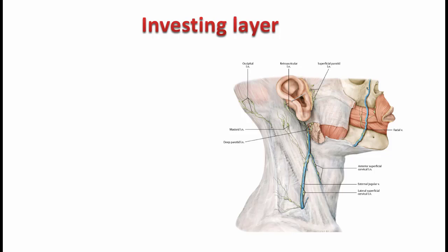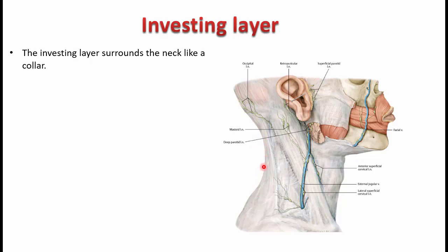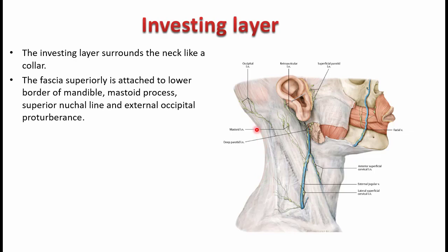First, let us trace the investing layer of deep cervical fascia. It completely surrounds the neck like a collar. It is attached posteriorly to the ligamentum nuchae, and superiorly it is attached to the lower border of the mandible, then continues to the mastoid process, external occipital protuberance, and the superior nuchal line. In the posterior midline, the external occipital protuberance is the superior attachment of the deep cervical fascia.